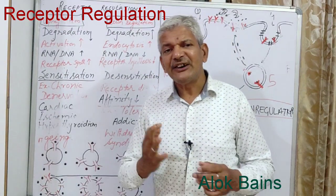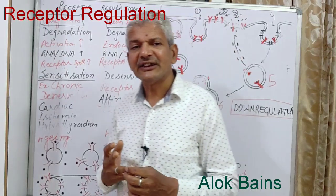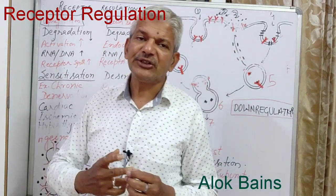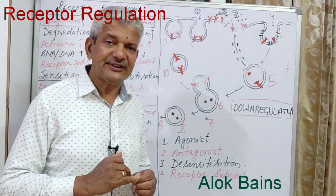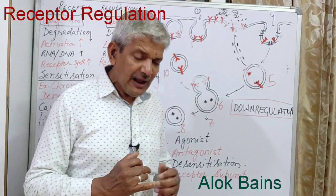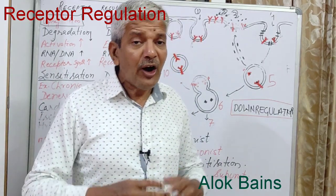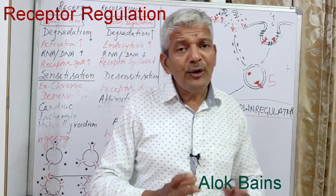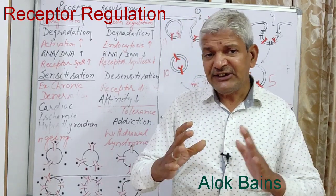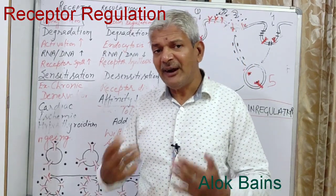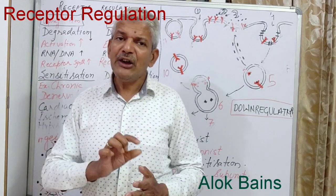There are three key words in this topic: number one is homeostasis, number two is ligands, and number three is receptors. Our body, organs, and cells always maintain homeostasis — it is a vital process that is developed by our body during evolution.